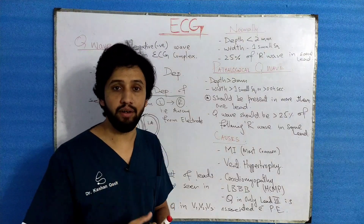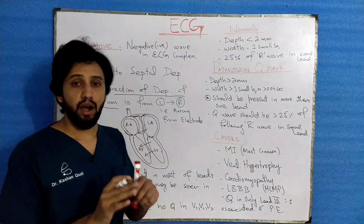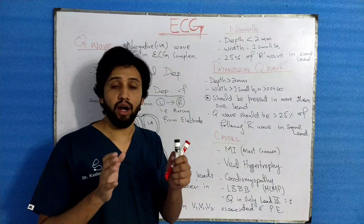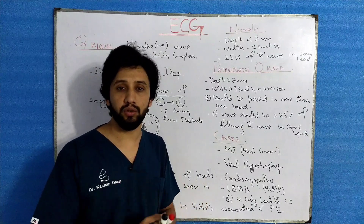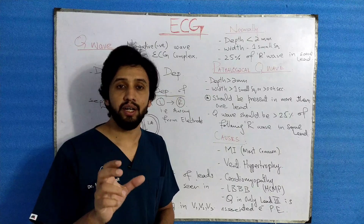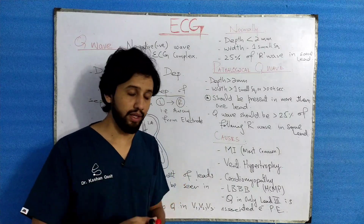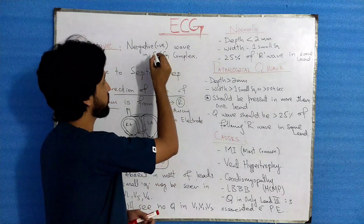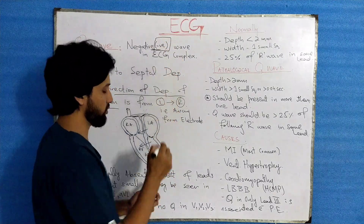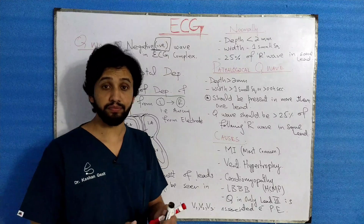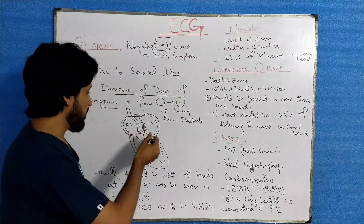This is how the impulse or electrical activity travels in the septum. Since it is moving away from the electrode, whenever the electrical signal is away from the electrode, the activity recorded on the ECG paper will be negative. That is why the Q part of the QRS complex is negative whenever seen on an ECG paper.